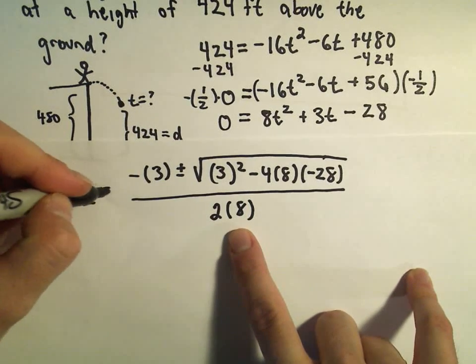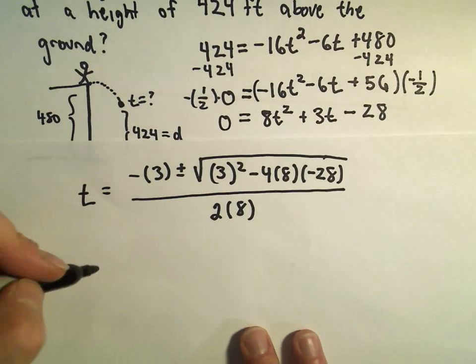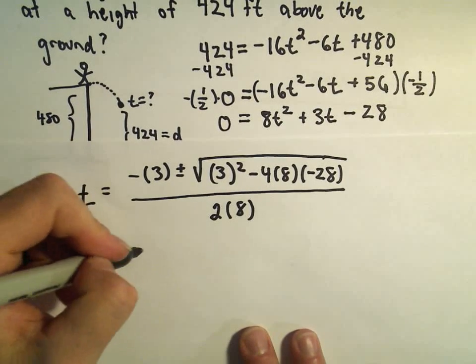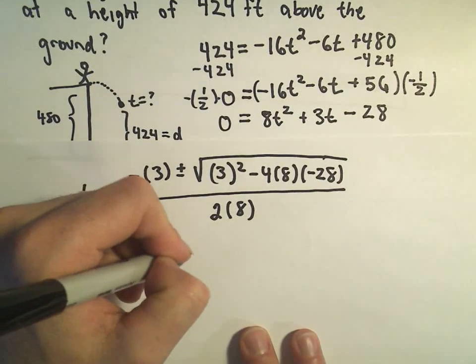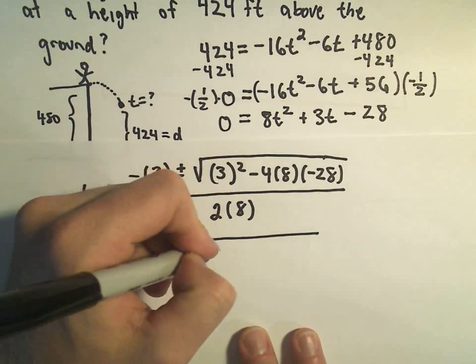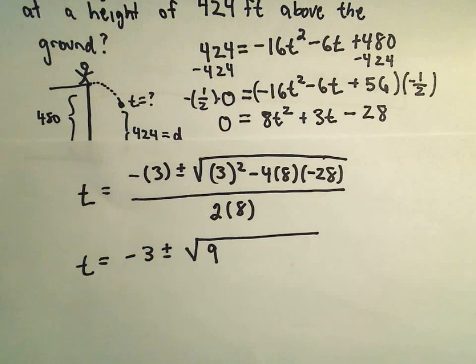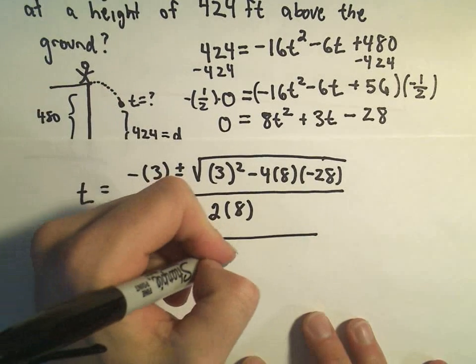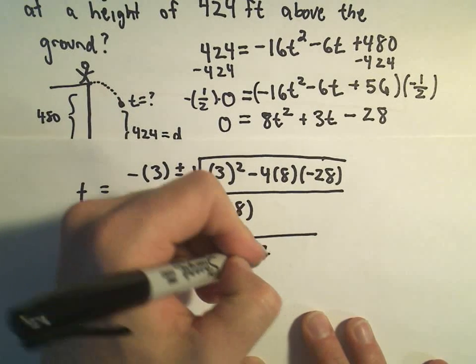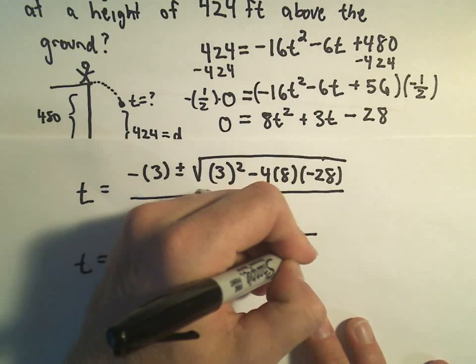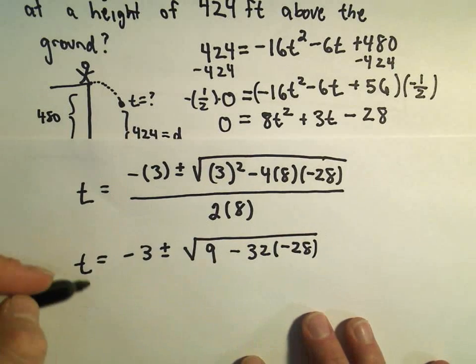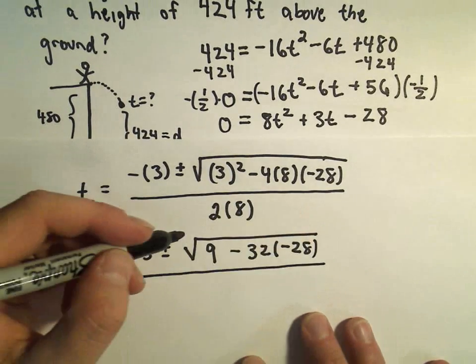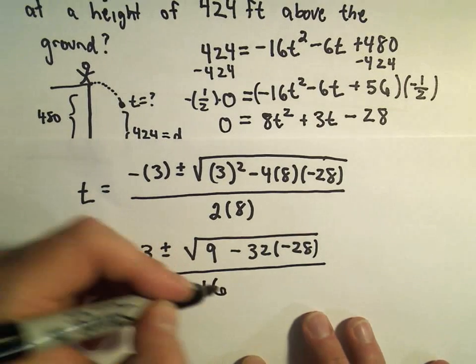So these are going to be our values for t. Just a little bit of tedious arithmetic, we've got negative 3 plus or minus the square root, so 3 squared is simply going to be 9, we've got negative 4 times 8, so that's going to be negative 32, and then we have to multiply that by negative 28, in the denominator, we have 2 times 8, which is 16.